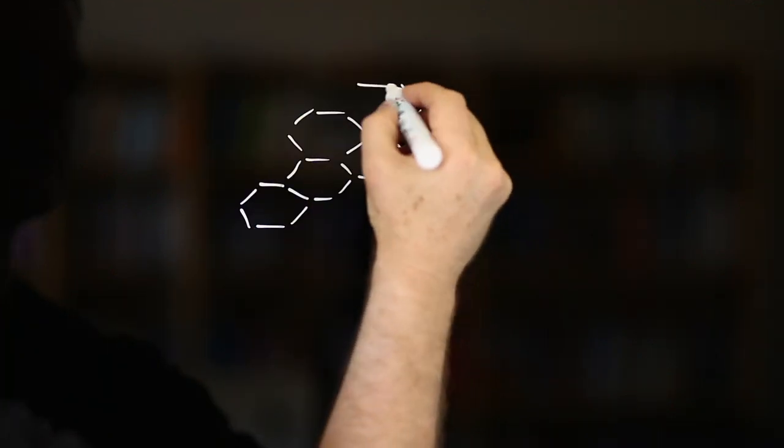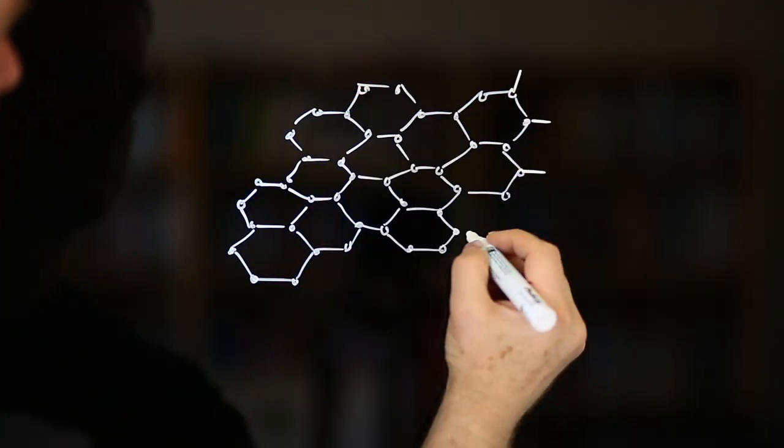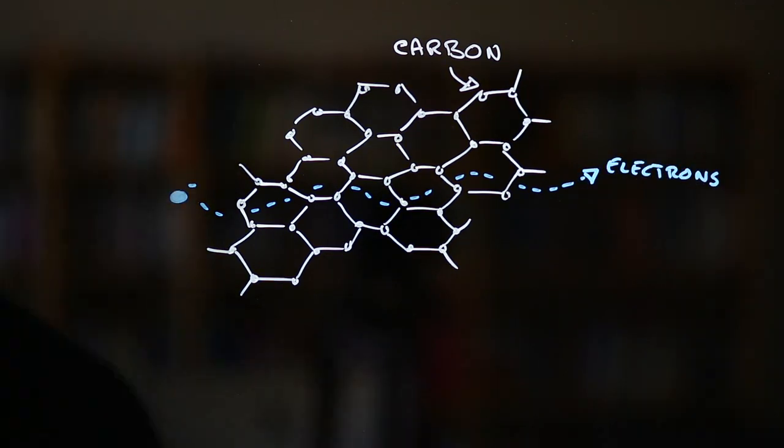Graphene is a form of carbon that's made from atomically thin sheets of the element. The way the carbon atoms are arranged in these sheets profoundly affects, for instance, the way that electrons pass through them.